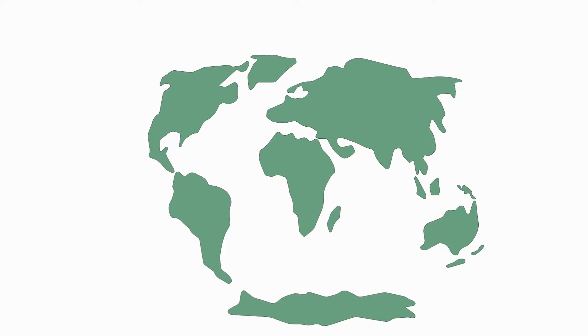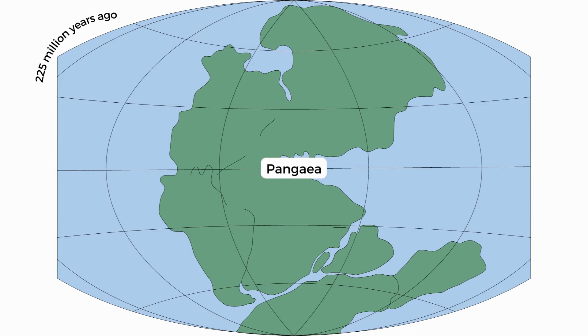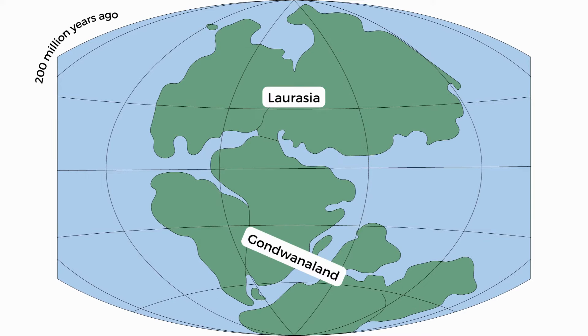This supercontinent was called Pangaea and separated into two main continents: Laurasia, which was in the north, and Gondwana land in the south.